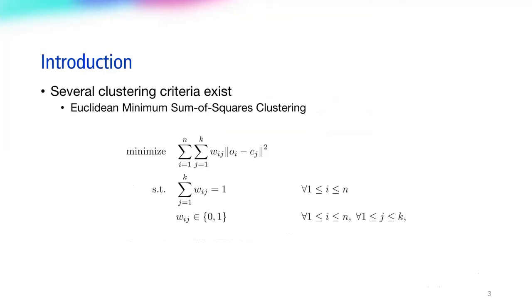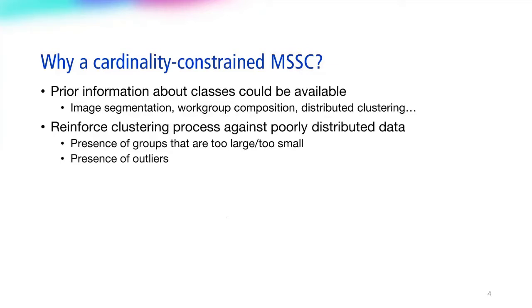Among these is the widely used Euclidean minimum sum-of-squares clustering. In practice, solving the Euclidean MSSC represents finding the center that minimizes cluster variance. So if MSSC is so reliable, why explore a cardinality-constrained variant of it? First, prior information could be known about the resulting classes, which can provide a significant boost to performance.